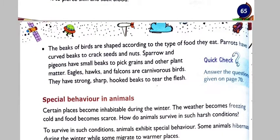The beaks of birds are shaped according to the type of food they eat. Sparrows and pheasants have small beaks to pick grains and other plant matter, which helps them to eat grains or plant material.